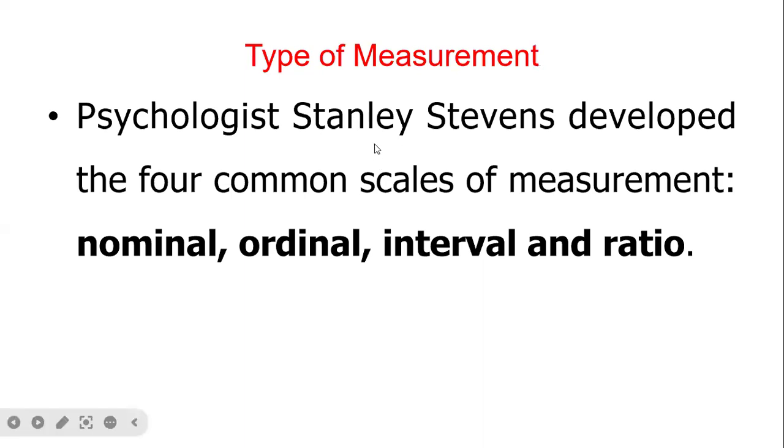Types of measurement: Cyclist Stanley developed four common scales of measurement. Nominal, which is only representation, like male and female. Ordinal, that's the order, like rank order of the Army. Interval, that is the range, like 10 to 20. And ratio scale, this is the ratio.